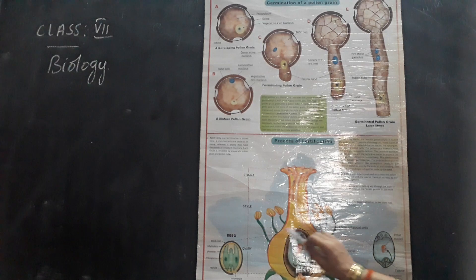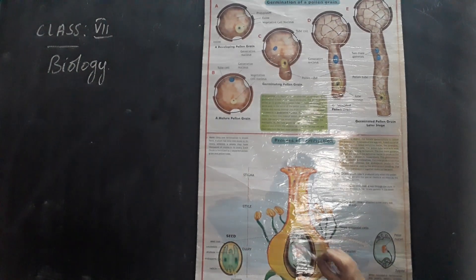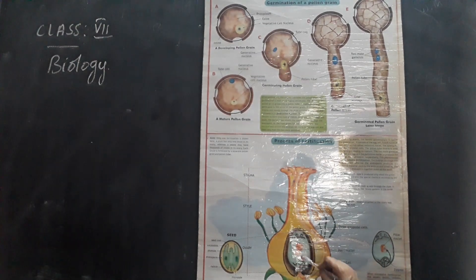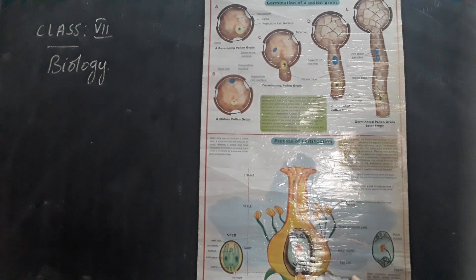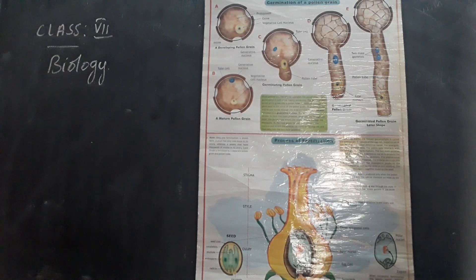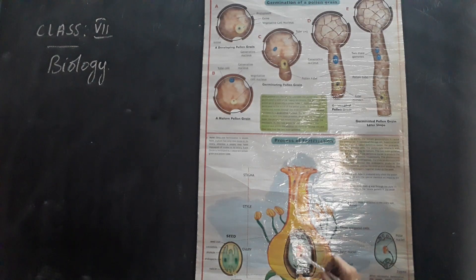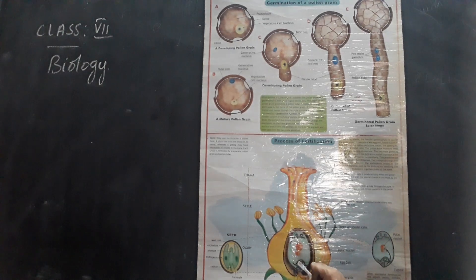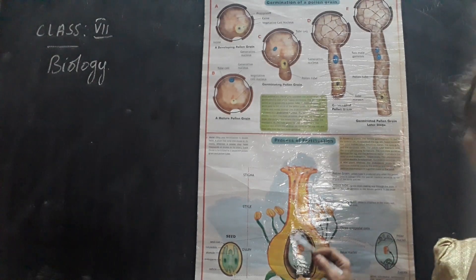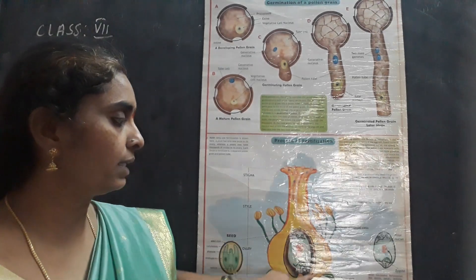This is the ovule present inside the ovary of the female. The male gamete is released and fuses with the female gamete. This is the ovary wall; the ovule is attached to the ovary wall. The male nuclei fuse with the egg cell and develop into the zygote. The fusion of male and female gametes results in the formation of a zygote. That is called fertilization.